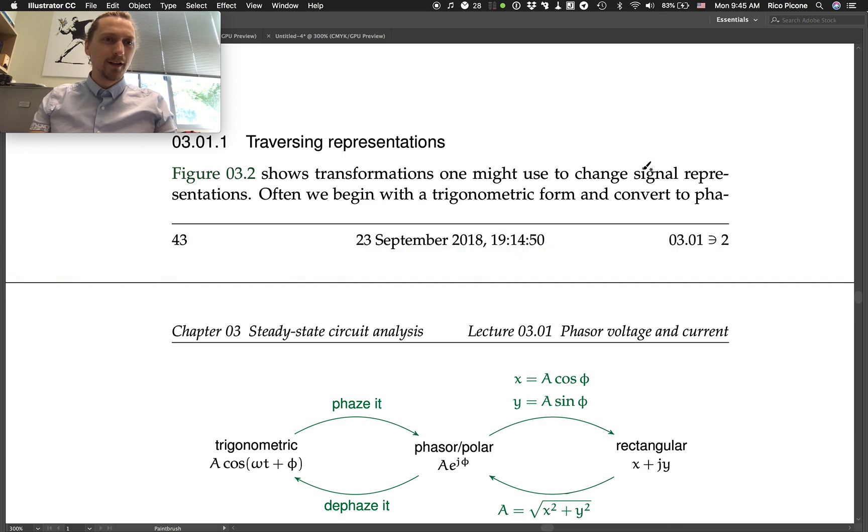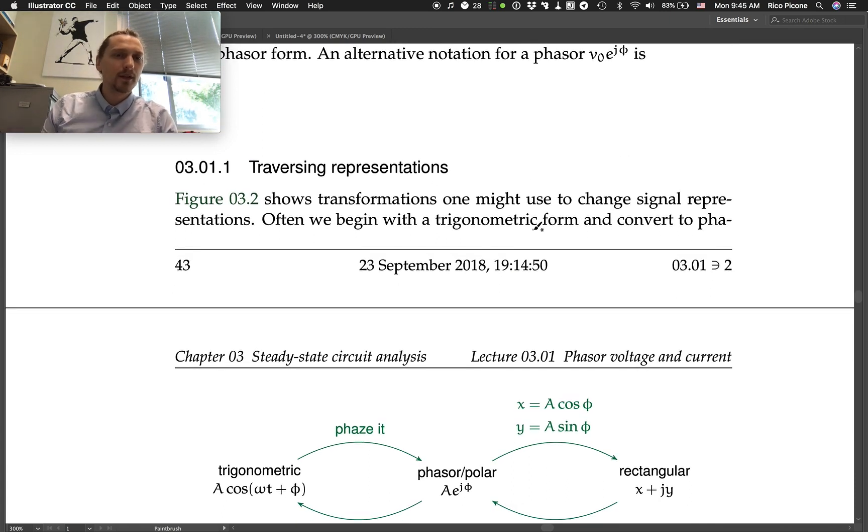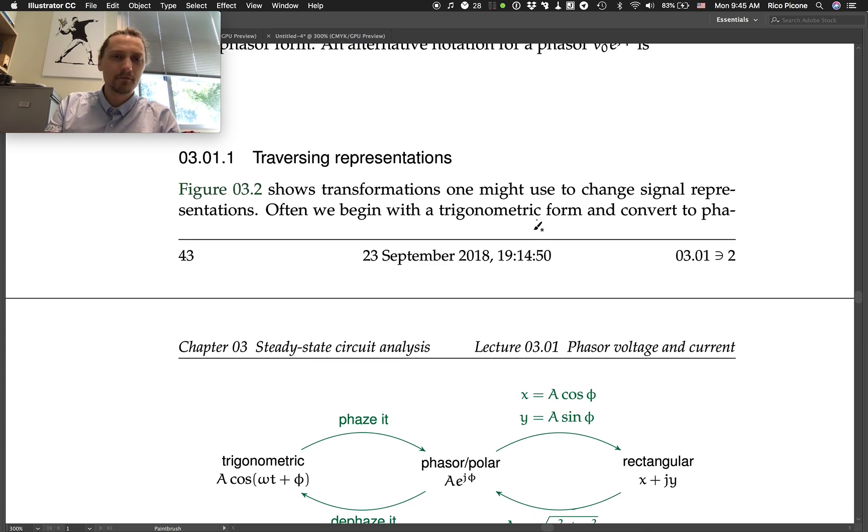Okay, so this is a little bonus lecture. I updated lecture 3.1 with this subsection traversing representations because I think that there's some confusion out there about how to go from one representation of a signal to another and back, especially with regard to phasors, so I want to try to explicitly state some things.